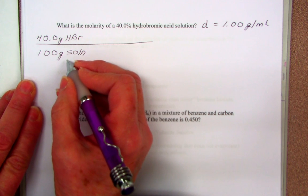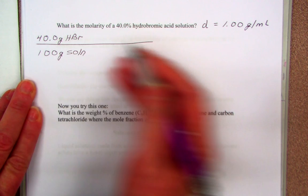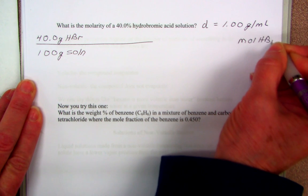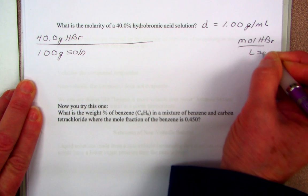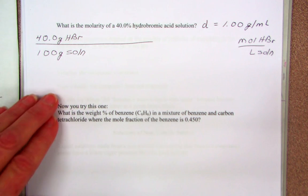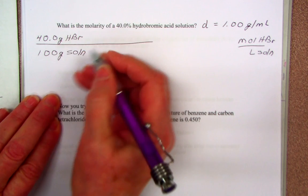I need molarity, so I want moles of HBr per liter of solution. I think it really helps if you write down the units you want, and then you can figure out how to get there. I know how to change grams to moles.